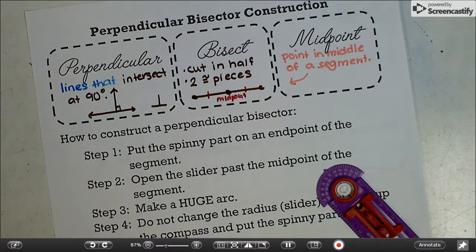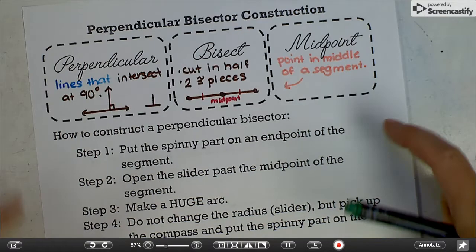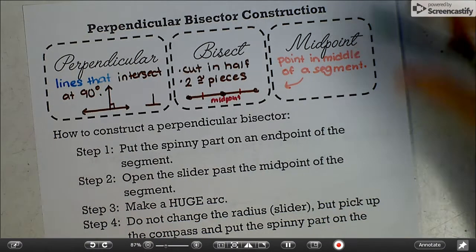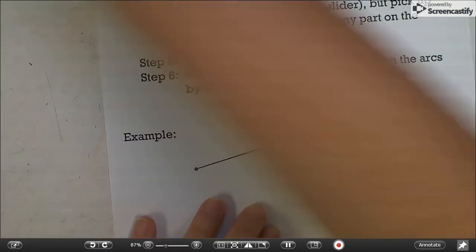Sometimes this perpendicular bisector construction is called a midpoint construction because you can also just look for the midpoint. I'll show you about how to do that in a second. These are the instructions. You can read those on your own. I will show you how to do it here.